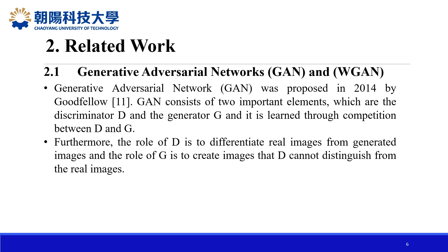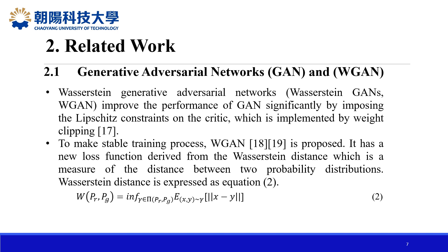Generative Adversarial Network was proposed in 2014 by Goodfellow. GAN consists of two important elements: the discriminator D and the generator G, learned through competition between D and G. The role of the discriminator is to differentiate real images from generated images, and the role of G is to create images that D cannot distinguish from real images. WGAN improves GAN performance significantly by imposing Lipschitz constraints on the critic, implemented by weight clipping. To ensure a stable training process, WGAN has a new loss function derived from the Wasserstein distance, which measures the distance between two probability distributions, expressed in equation 2.